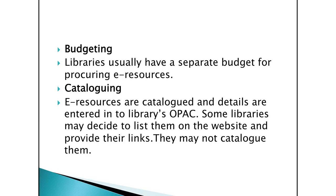Budgeting. Libraries usually have a separate budget for procuring e-resources. Cataloging. E-resources are cataloged and details are entered in the library OPAC. Some libraries may decide to list them on the website and provide their links, in which case they may not be cataloged.